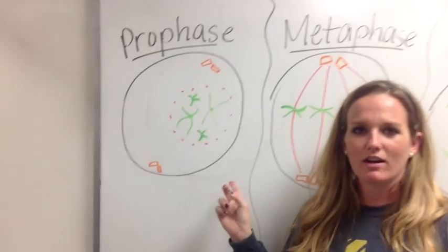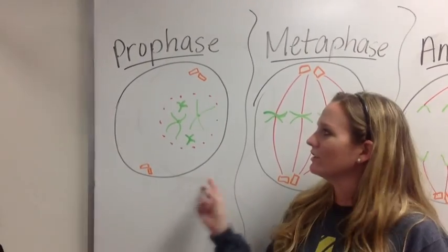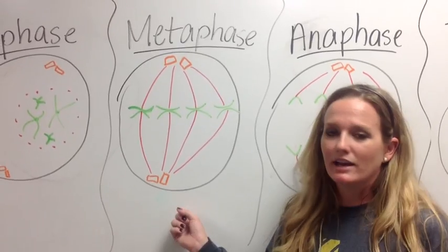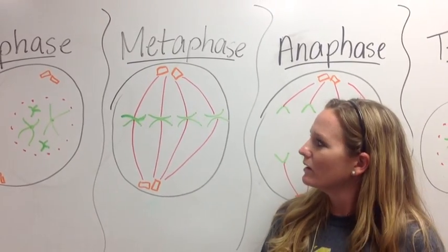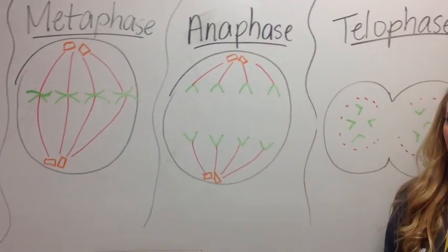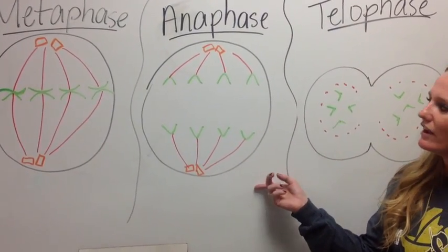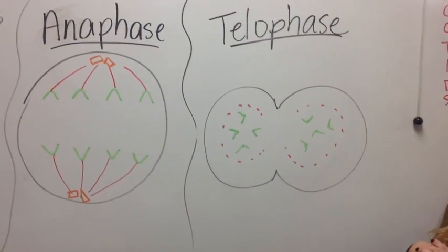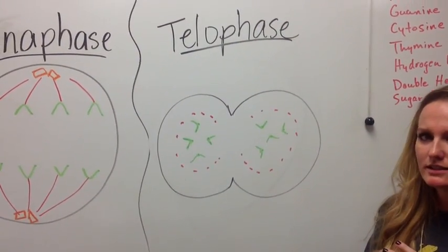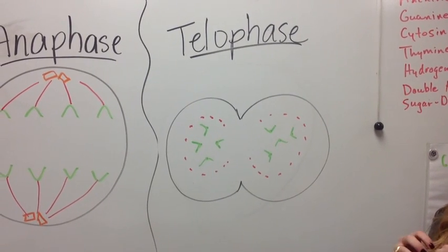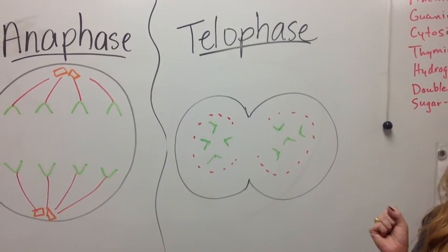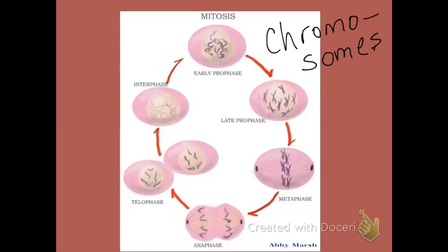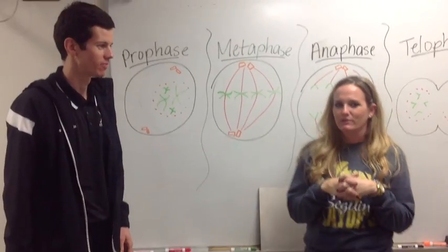In prophase, our DNA has already been replicated and our nuclear membrane is starting to dissolve. The next step is metaphase, whenever our chromosomes align in the middle. Next is anaphase, and our chromosomes have been pulled apart. Telophase splits the nucleus, and after that the cytoplasm will split in cytokinesis to give us two new daughter cells. Notice the position of the chromosomes in each stage of mitosis.